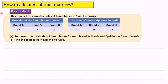Let us look at example 1. The diagram below shows the sales of handphones in Synapse Enterprise. A represents the total sales of handphones for each brand in March and April in the form of a matrix.